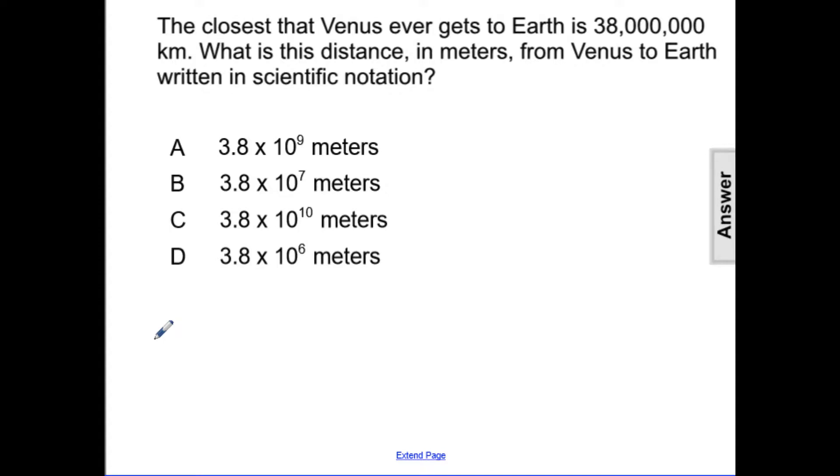The closest that Venus ever gets to Earth is 38 million kilometers. What is this distance in meters from Venus to Earth written in scientific notation?